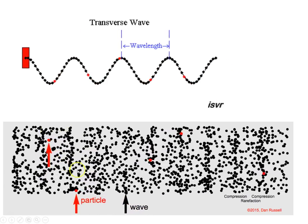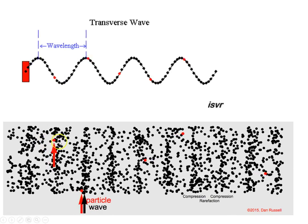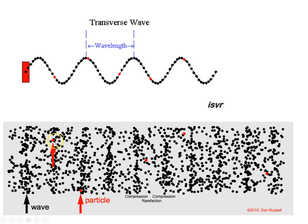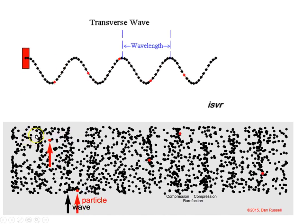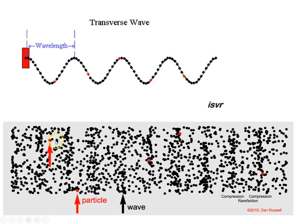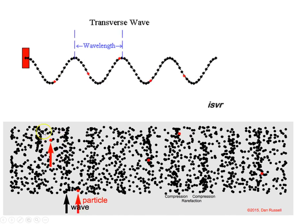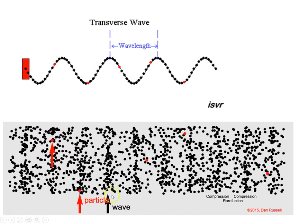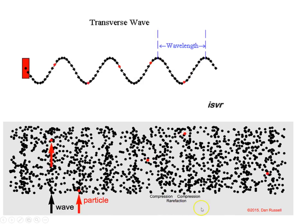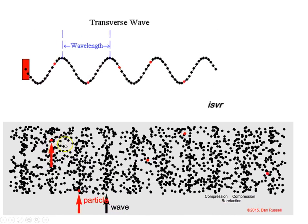Here's a longitudinal wave. Watch this red particle — it's just going back and forth horizontally. Even though it looks like all the particles are moving in one direction, they're really just vibrating back and forth. The energy, however, is moving all the way down. You can see the energy of the wave heading along, so the particle motion and the energy are both horizontal — parallel to each other.